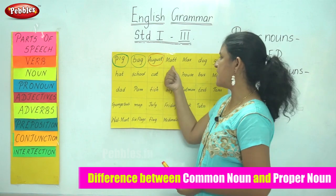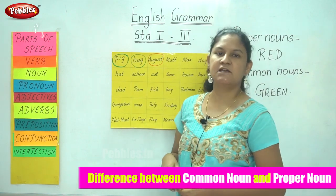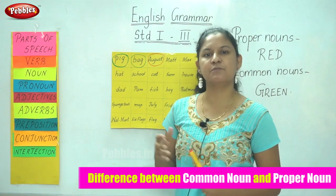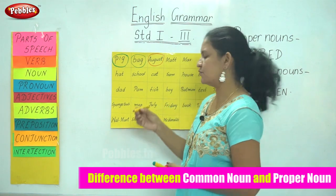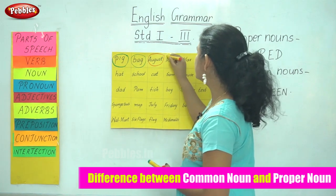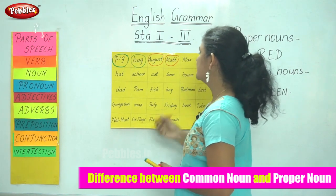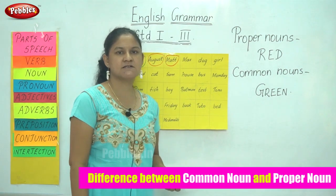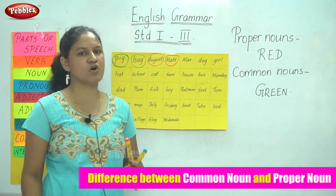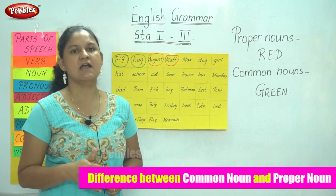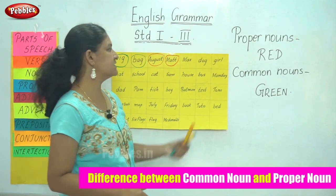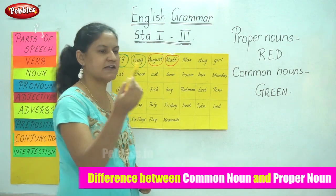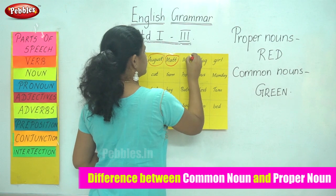Then we have the word mat. Mat is the name of a specific person, so it is a proper noun and I circle the word mat using my red sketch. The next word is Max. Max is the name of a particular person and hence is a proper noun — it starts with a capital letter. So I use my red sketch to circle the word Max.